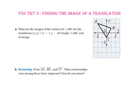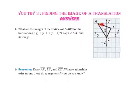Pause the video and do you try number 3. For part A, what are the images of the vertices of triangle ABC for the translation (X, Y) mapped onto (X plus 1, Y minus 4)? Graph triangle ABC and its image. The translation rule tells us we will move to the right 1 unit and down 4 units. Let's move each point: point A to the right 1 and down 4 units, point B to the right 1 and down 4 units, and point C to the right 1 and down 4 units. Let's complete our diagram by connecting A prime, B prime, and C prime.